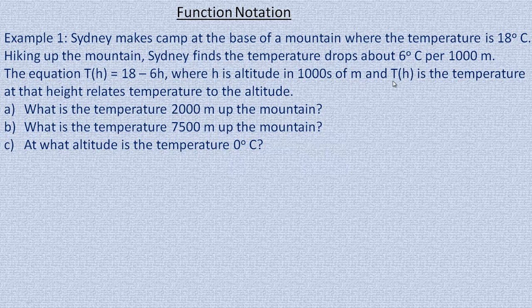This is the function notation. It's read as t of h — the temperature at whatever the altitude is. This is one symbol; it's not t multiplied by h. It represents the temperature at h thousands of meters. That's how the temperature relates to the altitude.